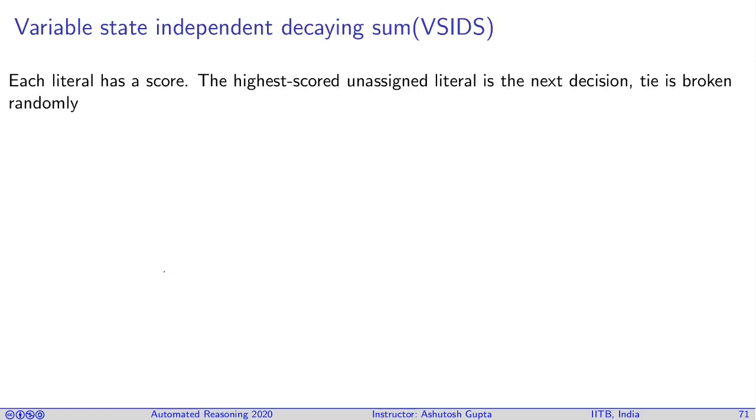What is VSIDS? Each literal has a score. Notice that I'm saying each literal, not each variable - positive literal and negative literal both may have different scores. Highest score unassigned literal is the next decision. You make that literal true and that's your decision. If two literals have same score, then you break the tie by random choice.